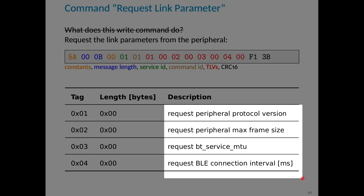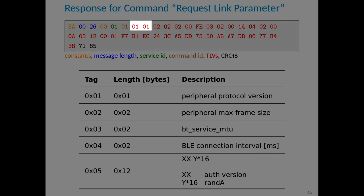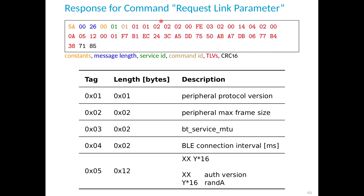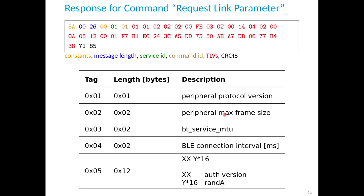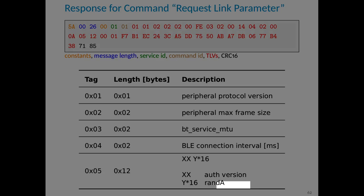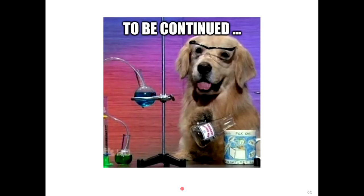The response from the fitness wearable has the same header structure. For tag 1 with length 1, the data is 2 — meaning the protocol version is 2. For tag 2 with length 2, the max frame size is given. And so on. The watch also sends an authentication version and a nonce. The next step would be that the watch uses these link parameters to create authentication between the smartphone and the watch — but that's a topic for another talk.